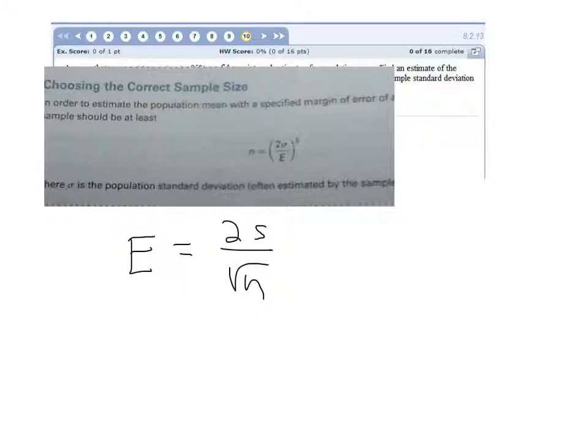Well, now what they're telling us is we're looking for n, not the margin of error. They told us the margin of error. They told us the standard deviation of the population. It's usually just a guess, but what we do, if we do a little bit of algebra with this,